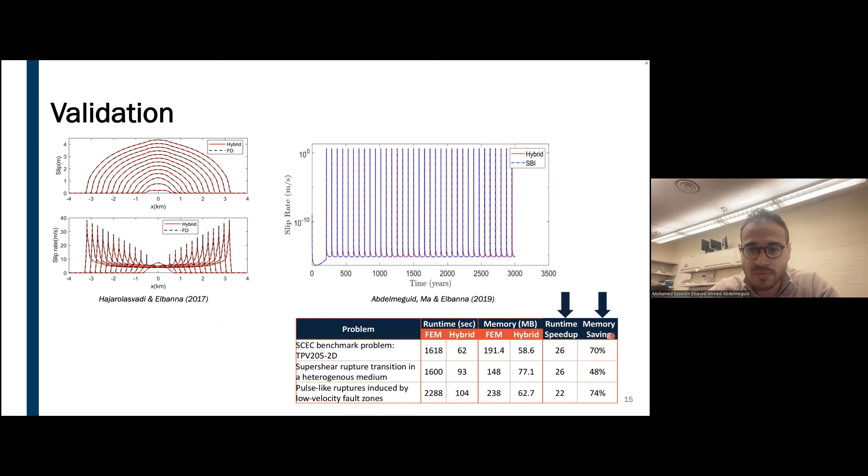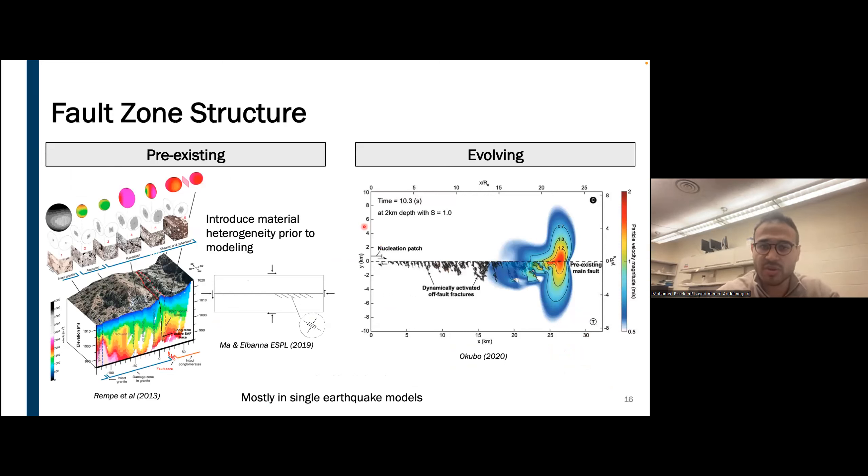The main objective of my work is to incorporate this fault zone complexity in earthquake cycle models and observe how they alter or perhaps don't alter the sequence of earthquakes. There are two main types of complexity that we can introduce in our modeling. One is a pre-existing model. For example, we can introduce material heterogeneity prior to simulated history and see how this affects the simulation. Or we can introduce small-scale fractures next to a main fault. Alternatively, we can look at an evolving fault zone in which we model the evolution of that fault zone along with the rupture propagation. Due to complexity of either of these models, they have been mainly solved using single earthquake models.